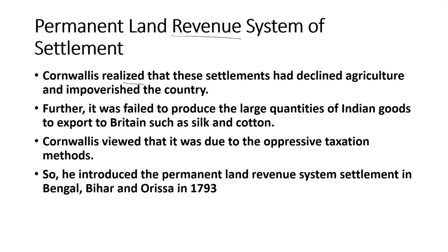During the period of Lord Cornwallis, this Permanent Land Revenue System of Settlement was introduced. Before that, Warren Hastings had introduced a five-year settlement, popularly known as the Quinquennial Settlement. After its failure, he introduced an annual settlement in Bengal.